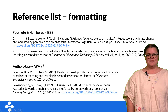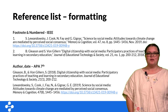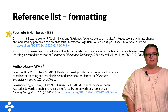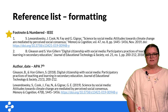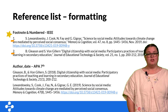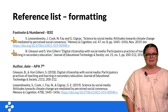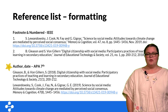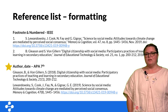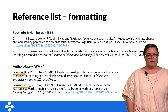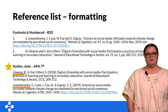The most obvious difference is the order of references within your list. For footnoted or numbered systems, references occur in numerical order — they're placed in the order in which they appear in text. But for author-date styles, the references are placed in alphabetical order according to the surname of the first author.